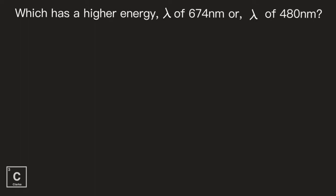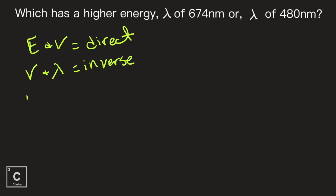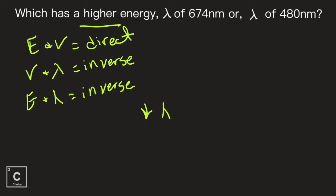Here's another one where math is not needed. Which has a higher energy — when lambda is 674 nanometers or when lambda is 480 nanometers? Remember that lambda means wavelength. So we're relating wavelength and energy. Energy and frequency have a direct relationship. Frequency and wavelength have an inverse relationship. Therefore, energy and wavelength are also inverse. So if we're looking for the higher energy, we're looking for the lowest lambda, which is 480 nanometers.